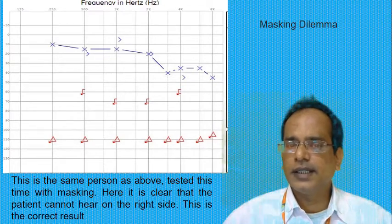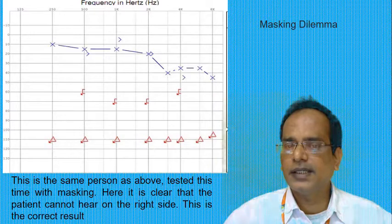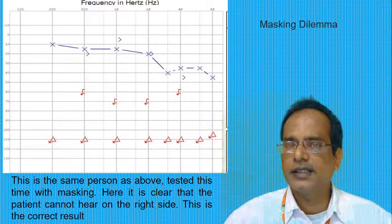You are seeing here, this diagram is the same person as above tested, this time with masking. Here it is clear that the patient cannot hear on the right side. This is the correct result, which is shown in the diagram.